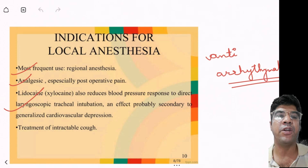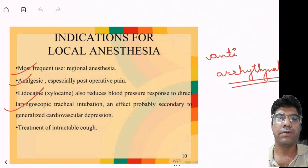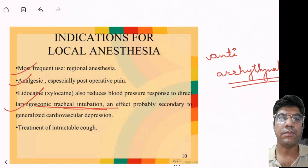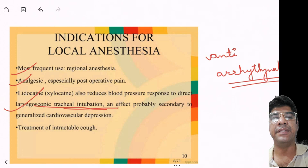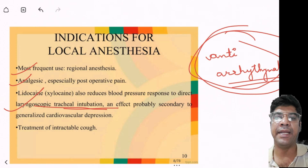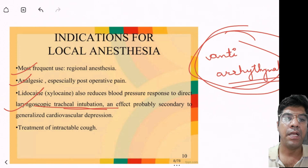For implants, local anesthesia is used during placement of dental implants. In other medical situations like tracheal intubation, local anesthesia can be administered topically or through IV infusion to reduce discomfort associated with tracheal intubation. Lignocaine used in tracheal intubation aims at reducing the cardiovascular stress response to the procedure. Additionally, lignocaine has anti-arrhythmic properties, which helps stabilize irregular heartbeats in situations like cardiac arrhythmia.